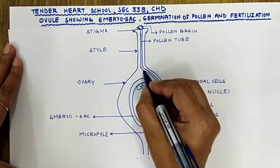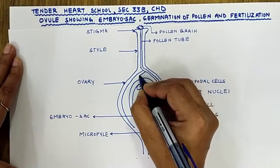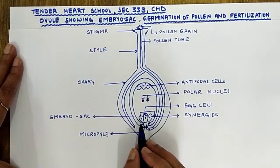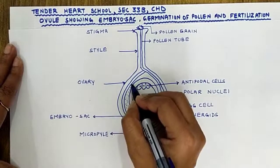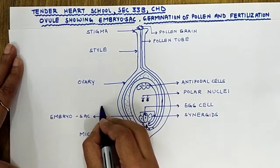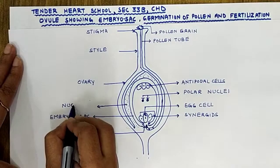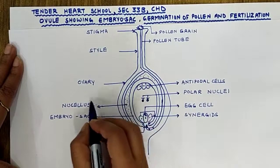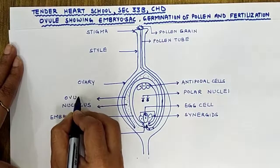This ovule is being protected by protective coverings which are called the integuments. Inside the integuments we have food-laden cells, because the growing embryo requires nourishment. These food-laden cells are called the nucellus. So this is our ovary, and you can label this one as ovule. We are making the structure of the ovule, and all these parts shown are parts of the ovule.